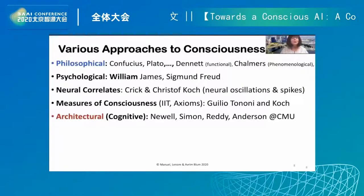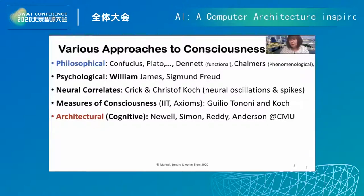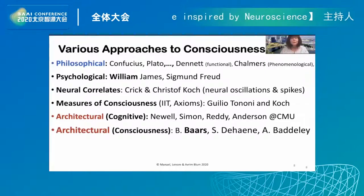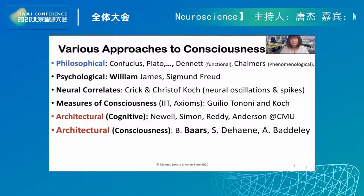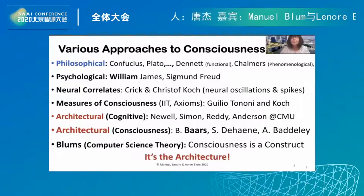There are psychological approaches looking at neural correlates and measures of consciousness. At Carnegie Mellon, Alan Newell, Herb Simon, and John Anderson — cognitive scientists — developed an architectural view for studying cognition. This perspective has had a huge influence on modern-day thinking about consciousness: Bernard Baars, Stanislas Dehaene, Alan Baddeley. The Blums take a similar approach, coming from computer science theory. We say consciousness is a construct — it's the architecture.